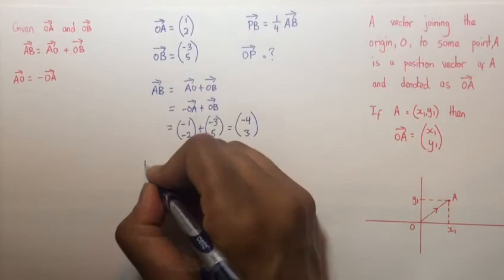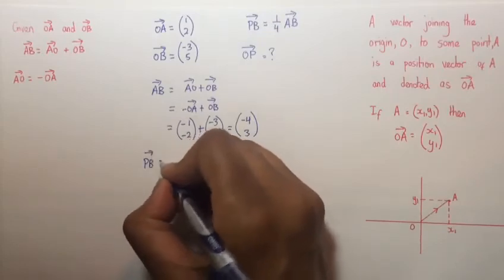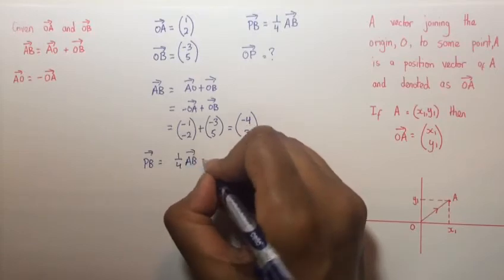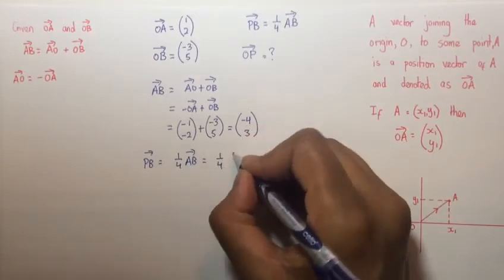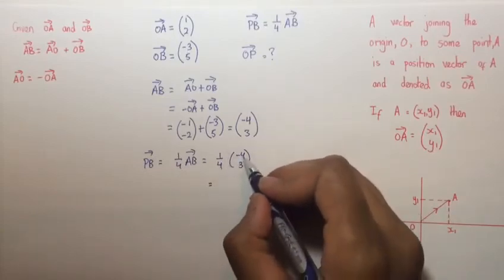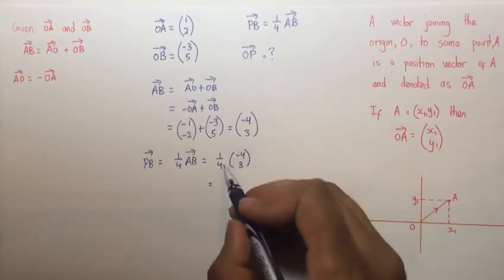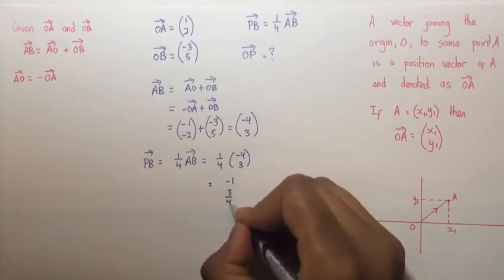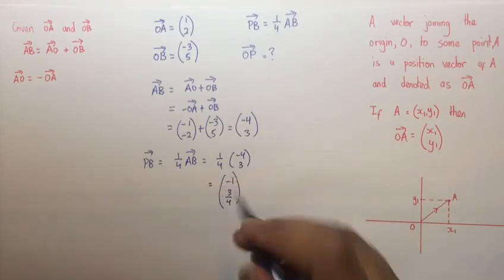Now our vector PB is equal to 1/4 of AB which is equal to 1/4 of (-4, 3). And that is equal to 1/4 of -4 which is -1 and 1/4 of 3 which is 3/4. So that is our vector PB.